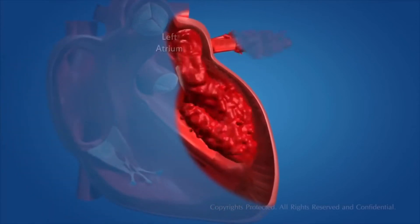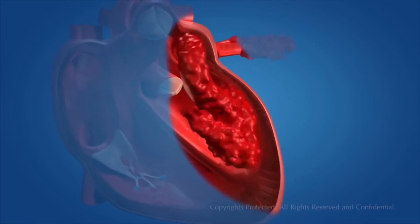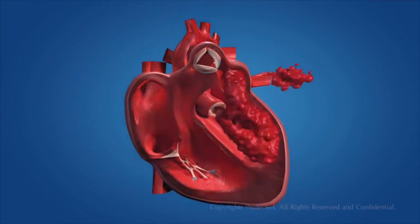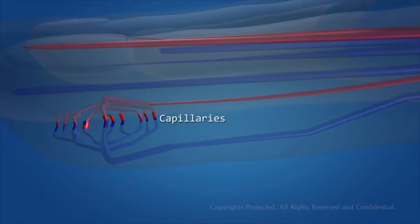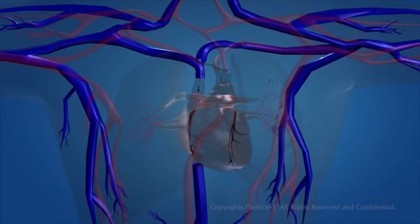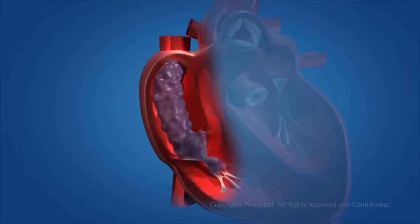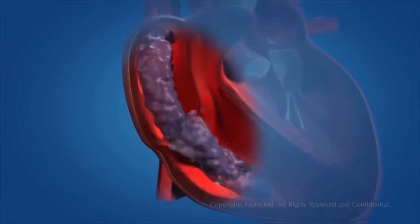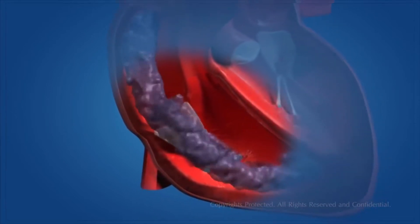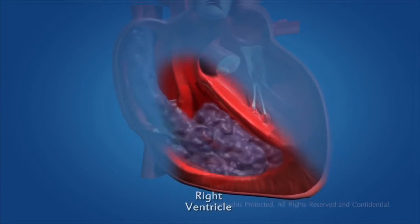Systemic circulation is the system where pure blood is supplied to all parts of the body. The oxygenated blood enters the aorta, which is carried by a network of arteries, arterioles, and capillaries to the tissues. From there, the deoxygenated blood is collected by venules, veins, and vena cava, emptying into the right atrium. This system provides essential nutrients, oxygen, and other substances to all tissues of the body.